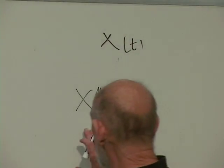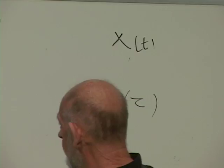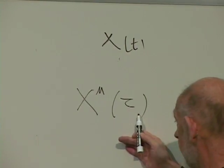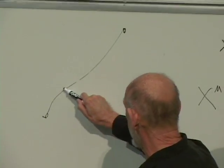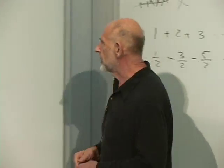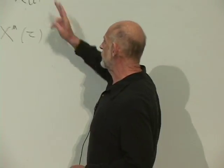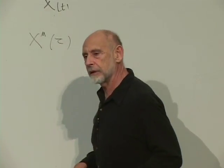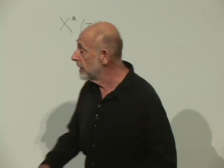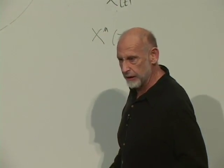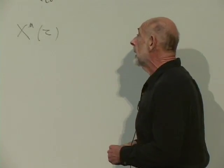If you know the four-dimensional position at every value of this parameter, you can say exactly where the trajectory went. There's a difference of emphasis: in non-relativistic physics you think of x as a function of time, while in relativistic physics you think of x^mu — the four components of position — as a function of a scalar parameter along the trajectory.